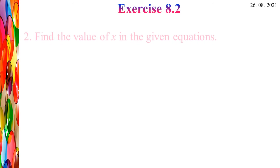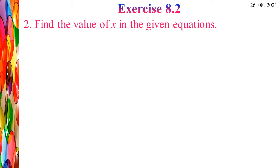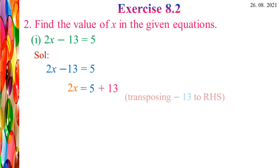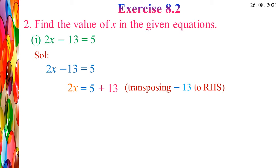Let's see Exercise 8.2. Second Roman: Find the value of X in the given equations. First: 2X - 13 = 5. Let us find the solution. Take the equation 2X - 13 = 5. Here X is the variable, so we have to find the X value. 2X = 5 + 13. Transposing -13 to the RHS, it becomes +13.